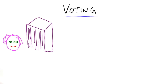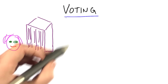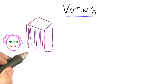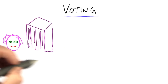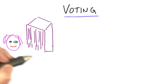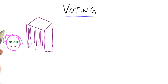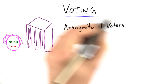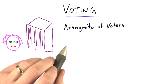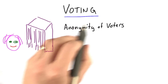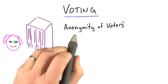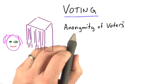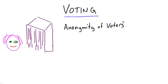The next topic I want to talk about is voting. Voting involves lots of cryptographic issues, and there are many interesting security properties that a voting system should provide. One property that many voting systems desire to provide is anonymity — that it shouldn't be possible for an adversary to know who someone voted for.